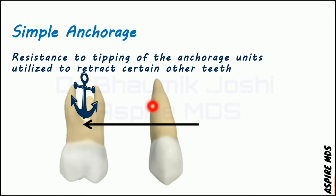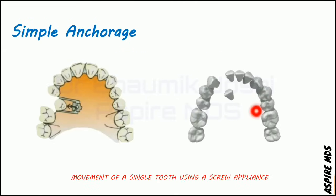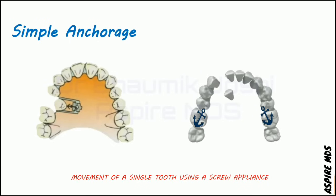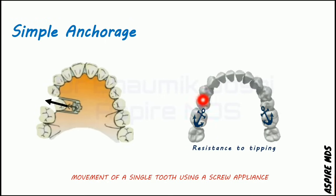Simple anchorage is resistance to tipping of the anchorage unit utilized to retract the other teeth. For example, movement of a single tooth using a screw appliance — a tooth present palatally can be moved using a screw placed nearby. This screw gets anchorage from all the other teeth, and when the screw is opened, it pushes the tooth back into the arch. The resistance to tooth movement is of the tipping type, resisted by the anchor teeth, and ultimately the desired tooth movement is achieved. This is known as simple anchorage.